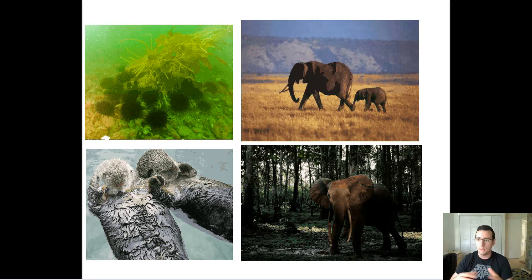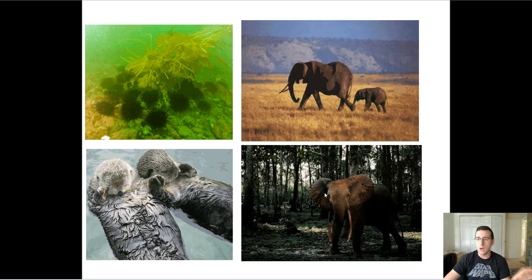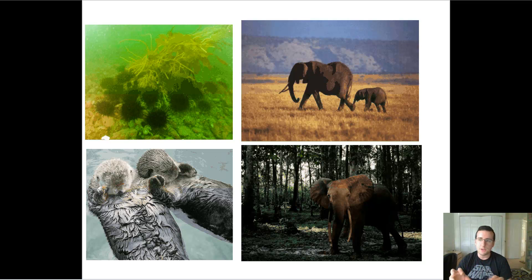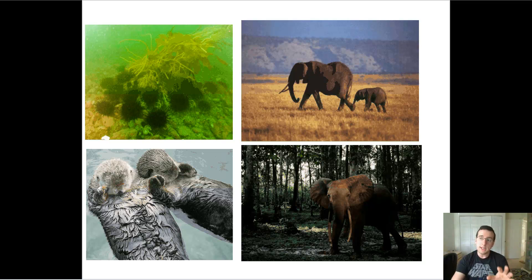That's an example of a keystone species. Another good example is the sea urchin and the sea otter — together, they're keystone species for some aquatic ecosystems. The sea otter eats sea urchins, which are spiky echinoderms related to sea stars. These sea urchins eat a lot of kelp, which is like algae. If you have a lot of sea urchins, the kelp doesn't grow much. But if the urchins are eaten heavily, the kelp starts growing like crazy, and that changes the entire ecosystem.